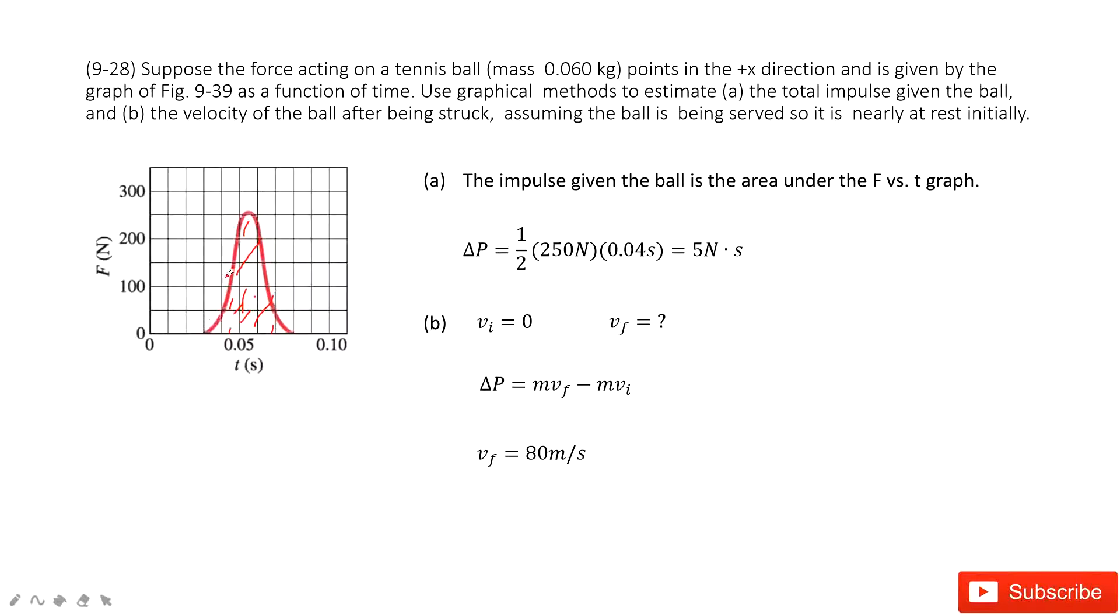How can we do that? We can consider this one as a triangle. So we can get this side length, this edge. Then we can get the area under the line, 5 N·s.